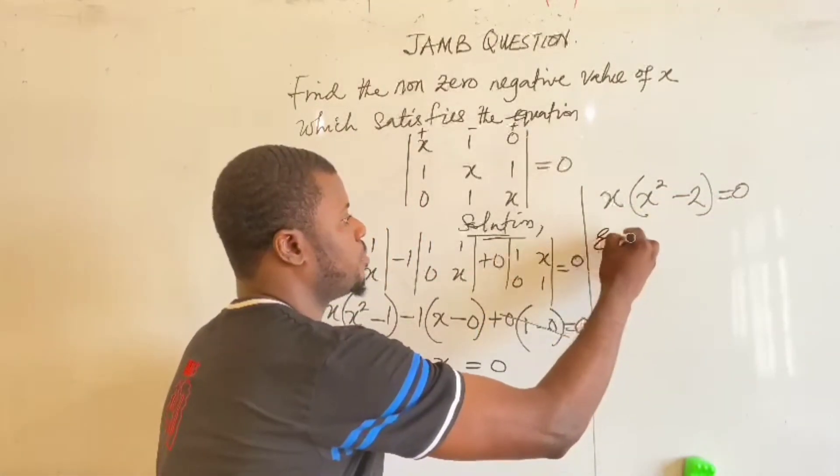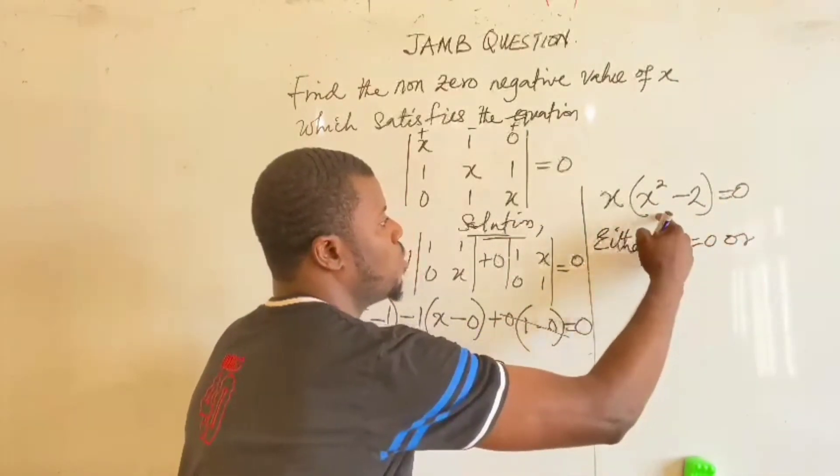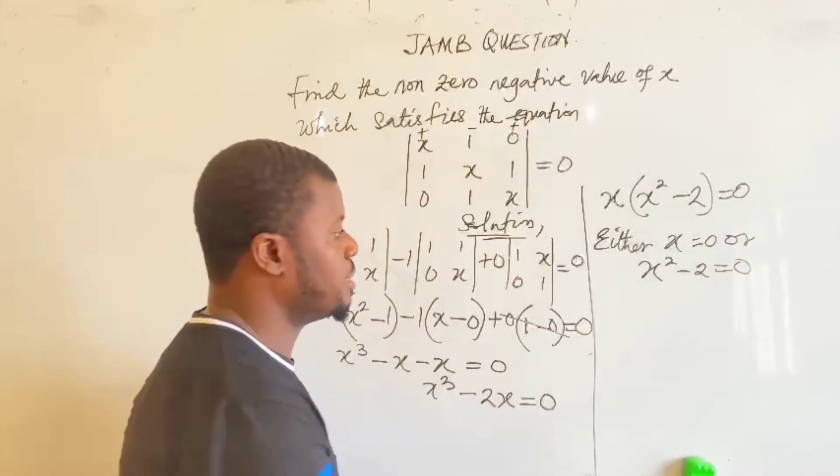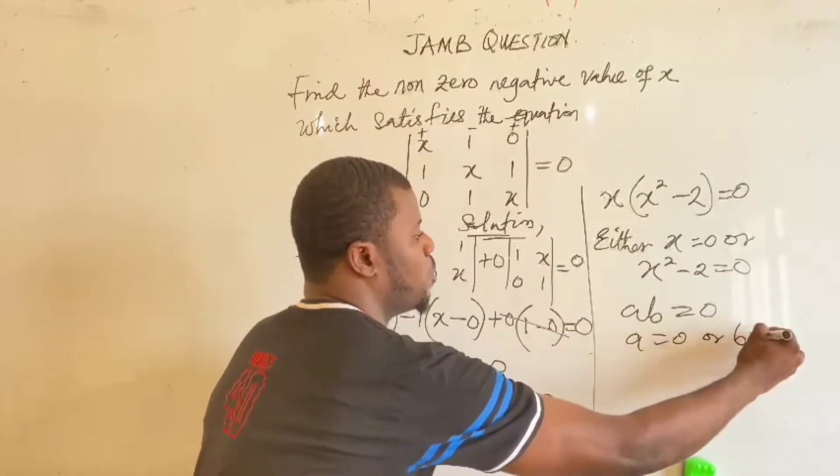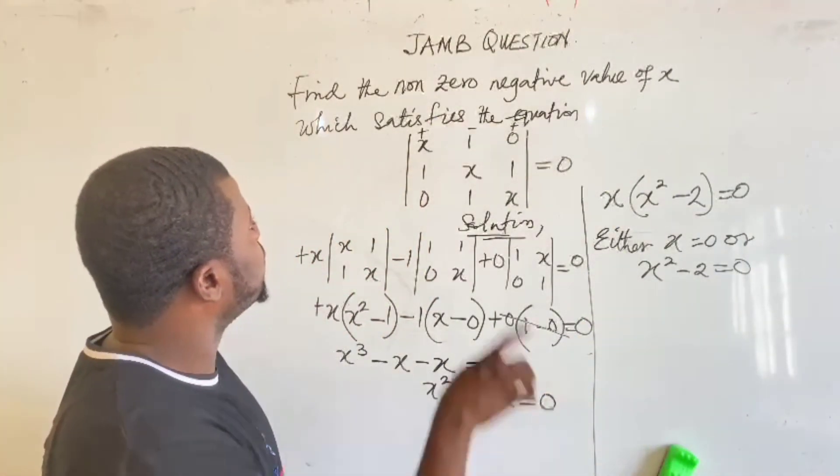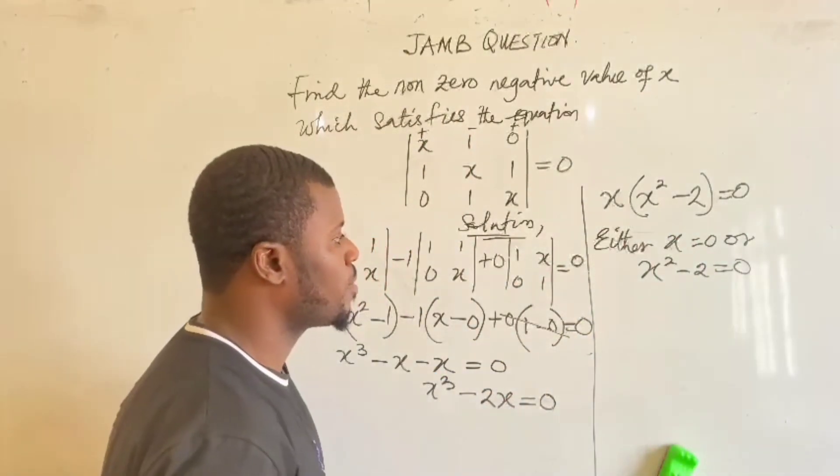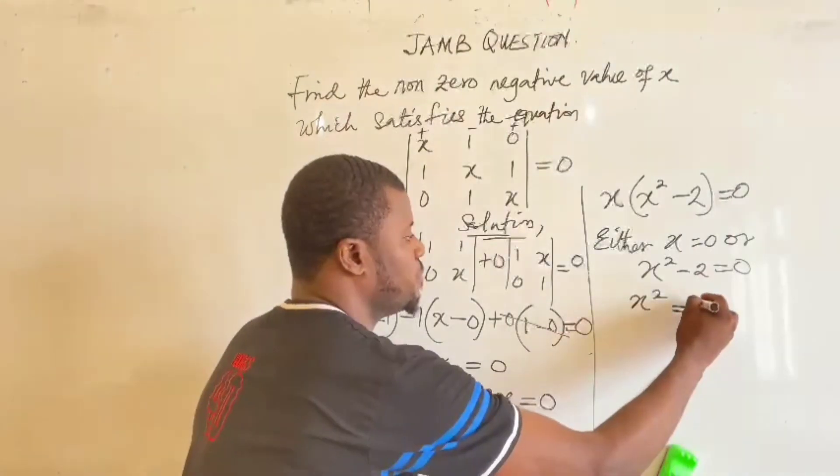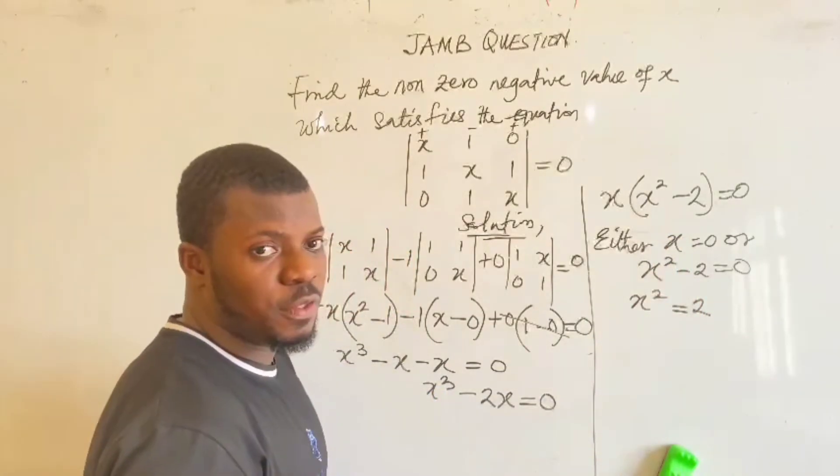This follows the rule that we have A times B equal to 0, it is either A equal to 0 or B equal to 0. So that is the model we are using here. So if that will be the case, hence it is just the same if you find a non-zero, that means this will not be necessary. Let's start with that. This will become x squared equal to 2. If this minus 2 crosses, it changes to positive 2. The next thing we are going to do is to take the square root of both sides of the equation.